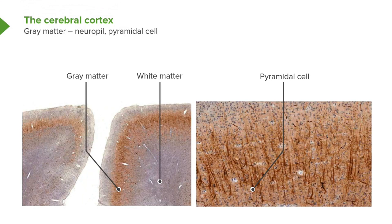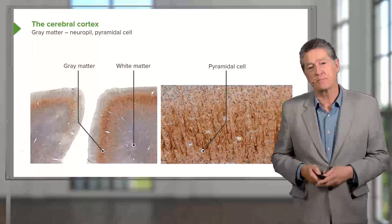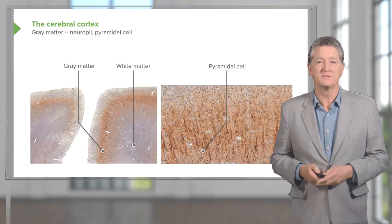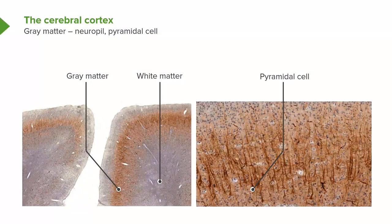Neuropil refers to the part of the neural tissue occupied by unmyelinated axons, dendrites, and glial cells. If you hear that term in subsequent lectures, it refers to those supporting components of the tissue — the glial cells, plus dendrites and unmyelinated axons. The real focus is the main neuron, and in this case it's the pyramidal cell.